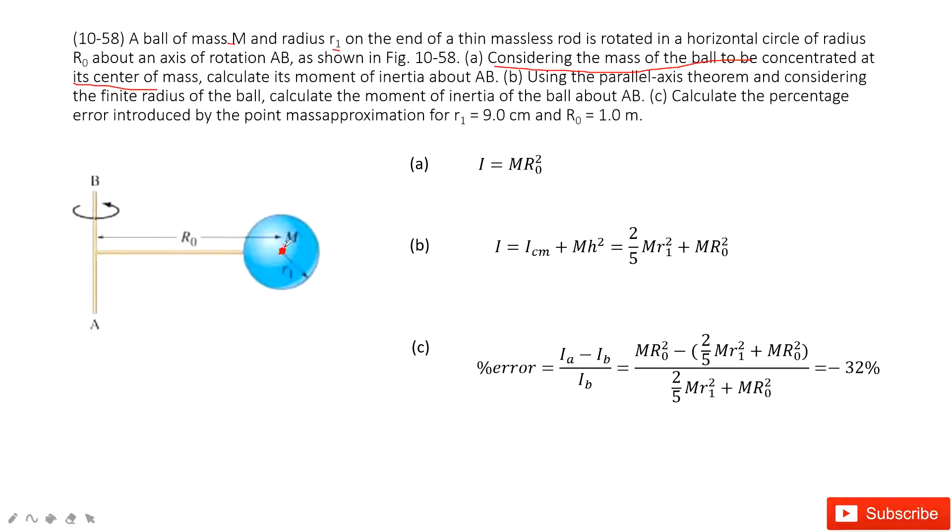The mass is M. The moment of inertia is this mass times the distance R0 squared. We don't need to consider this ball's moment of inertia about its own center.